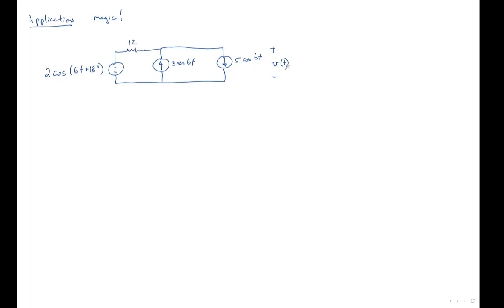And we're interested in finding the voltage across this current source. Okay, get ready for the magic. Our first step is to convert this into phasor form. And in phasor form, we have to first double check that all of our frequencies are the same. And then we're just going to remember what our frequency is. And now we're going to write this in phasor form, also called writing it in the frequency domain, where this becomes the complex number 2 at an angle of 18.